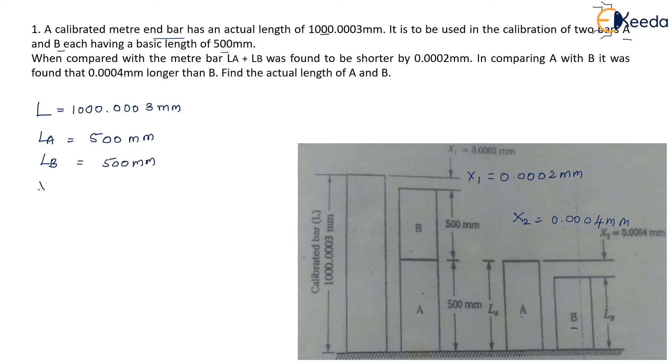Now x1 that is the difference between these two bars combined together and the actual meter bar is given as 0.0002 mm and x2 is given as 0.0004 mm.